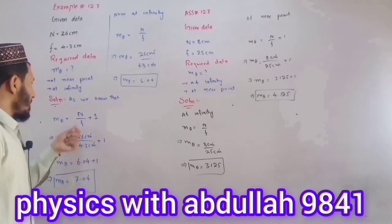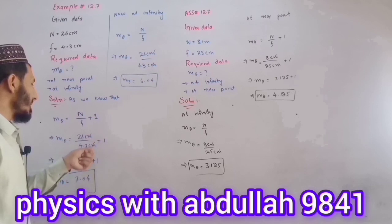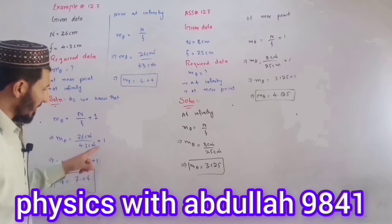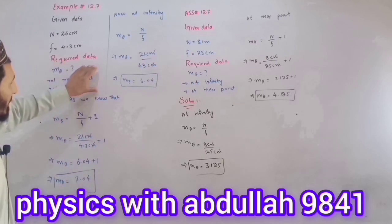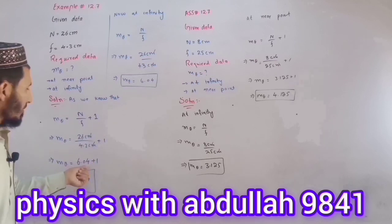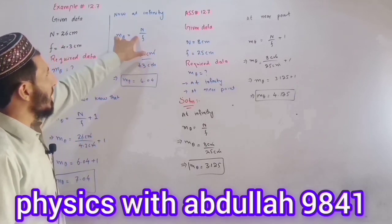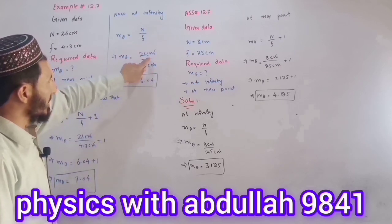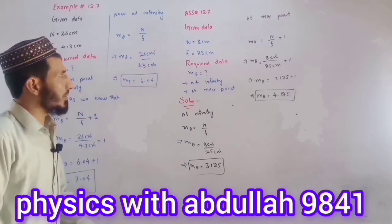Applying the formula: m_theta equals n divided by f plus 1. With n equal to 26 cm and f equal to 4.3 cm: 26 divided by 4.3 gives 6.04, plus 1 equals approximately 7.04. The formula m_theta equals n divided by f is applied, giving 26 divided by 4.3 equal to approximately 6.04.